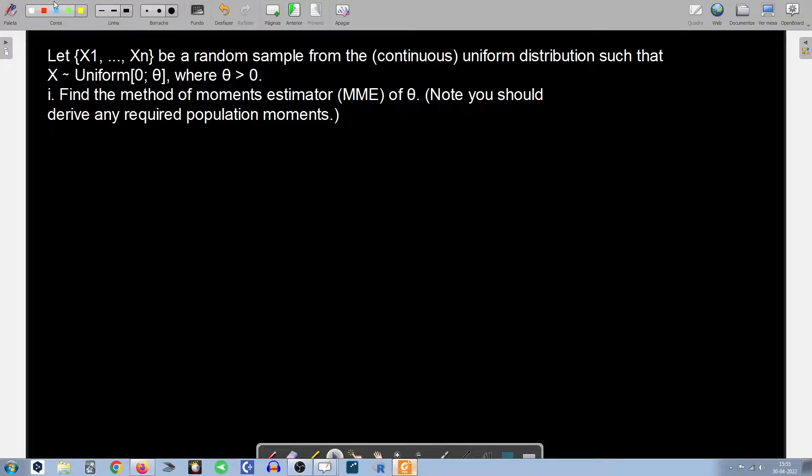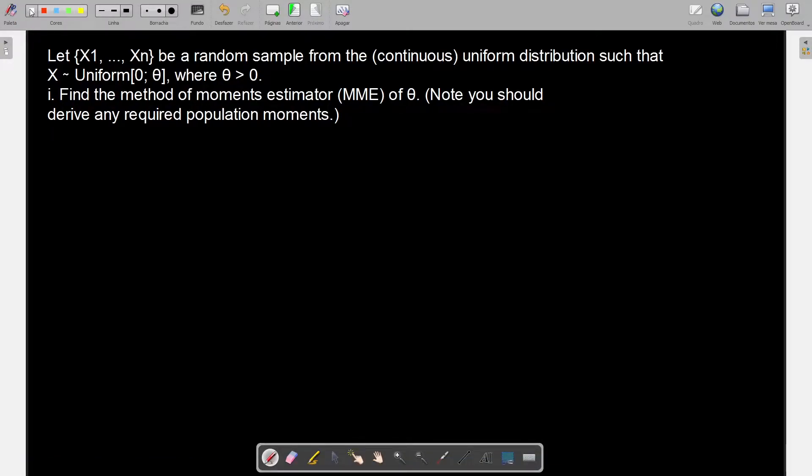What's up guys, in this problem we are asked to find the method of moments estimator of this parameter. You can use some properties that you know, but you are explicitly told that you should derive any required population moments, even though you might know the properties.